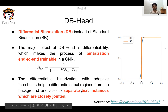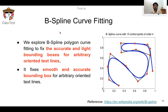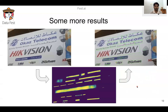Finally, we use B-spline curve fitting to fix accurate and tight boxes for arbitrarily oriented text lines. It fixes smooth and accurate bounding boxes for arbitrary oriented text. Using 15 control points, it accurately fits the curve for arbitrary text. For more results, here is a multilingual image where Arabic text along with English text is present, along with logos and company symbols, all accurately segmented by our system.